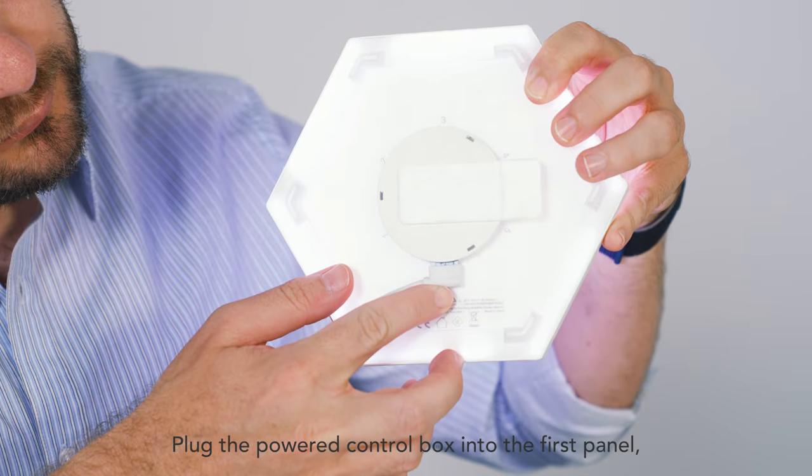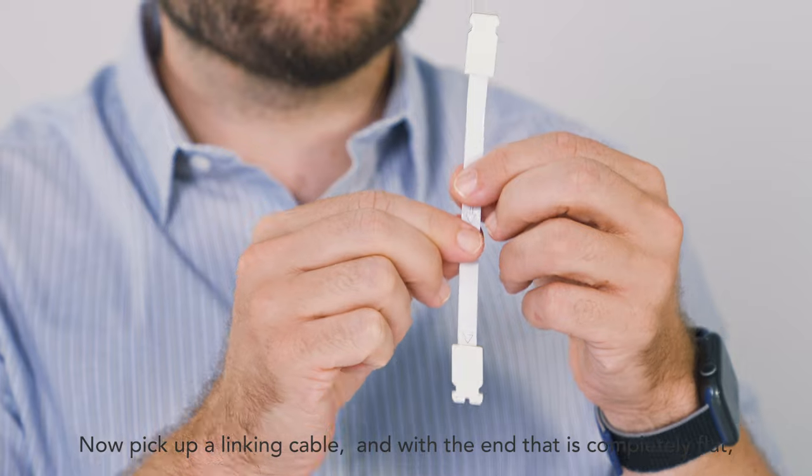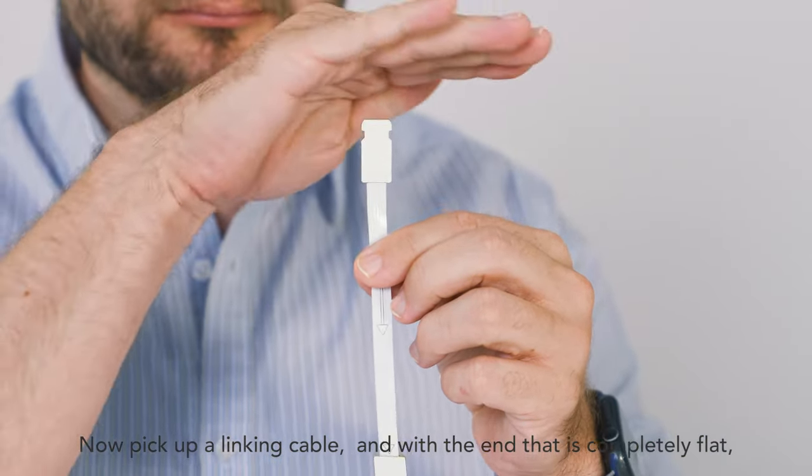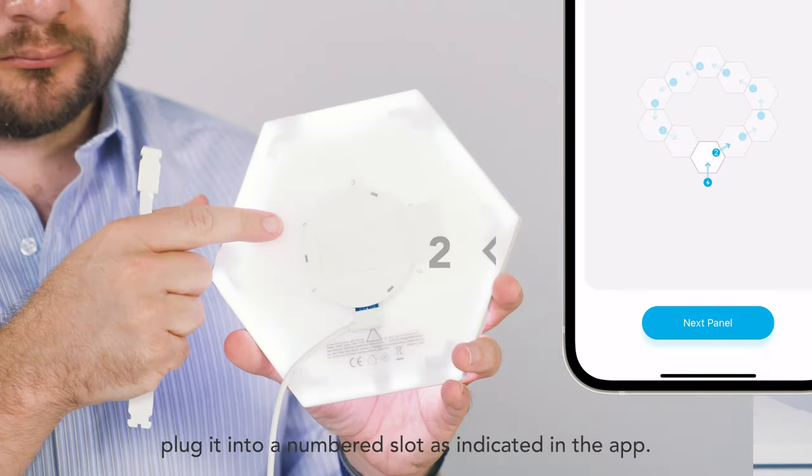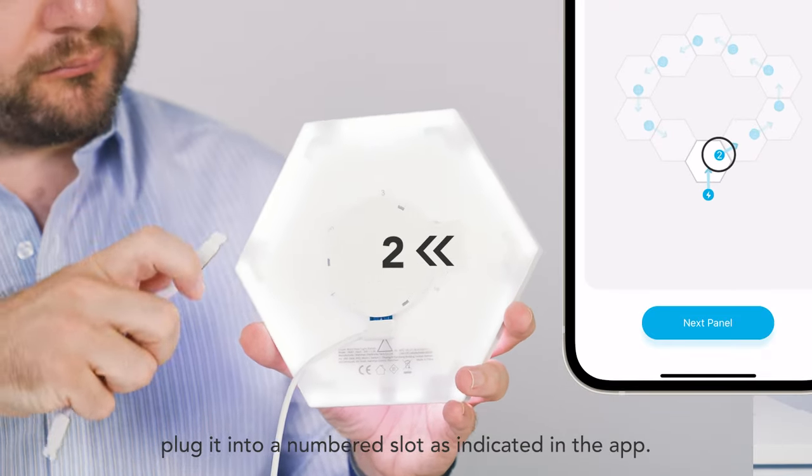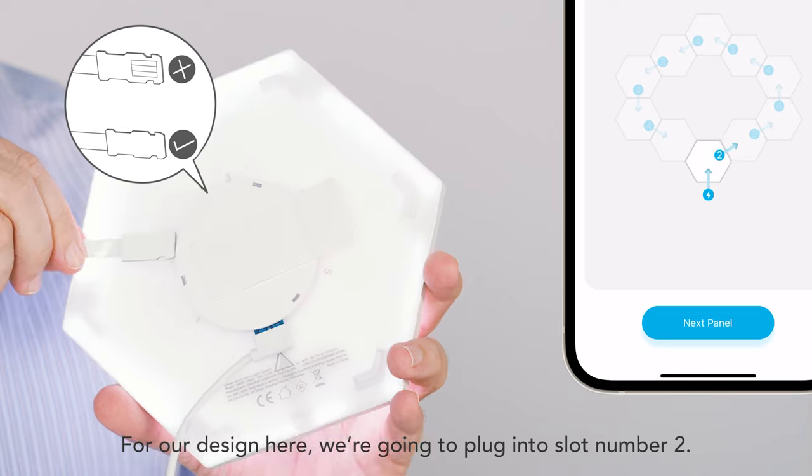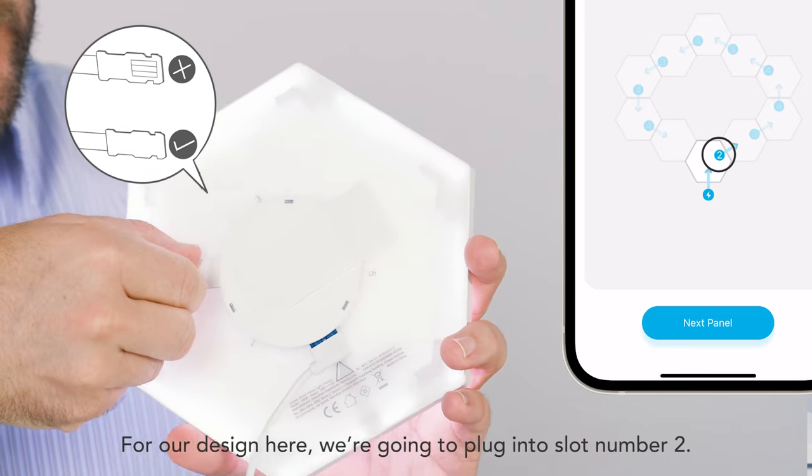Plug the power control box into the first panel. Now pick up a linking cable, and with the end that is completely flat, plug it into a numbered slot as indicated in the app. For our design here, we're going to plug into slot number 2.